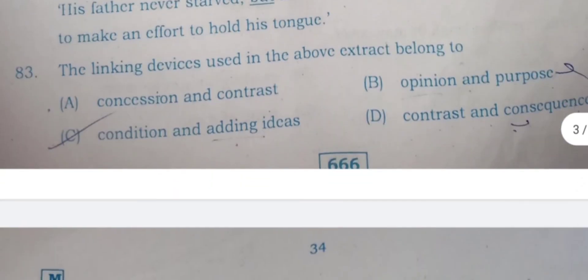Question 83: His father never stopped, but he could not cast any doubt on his story, so he had to make an effort to hold his tongue. The linking device used in the above extract belongs to - conjunctions are those words which join either two words, two phrases, or two sentences. Options are: A) concession and contrast, B) opinion and purpose, C) condition and adding ideas, and D) contrast and consequence. Here 'but' is used as contrast and 'so' is used as consequence. D is the right answer.